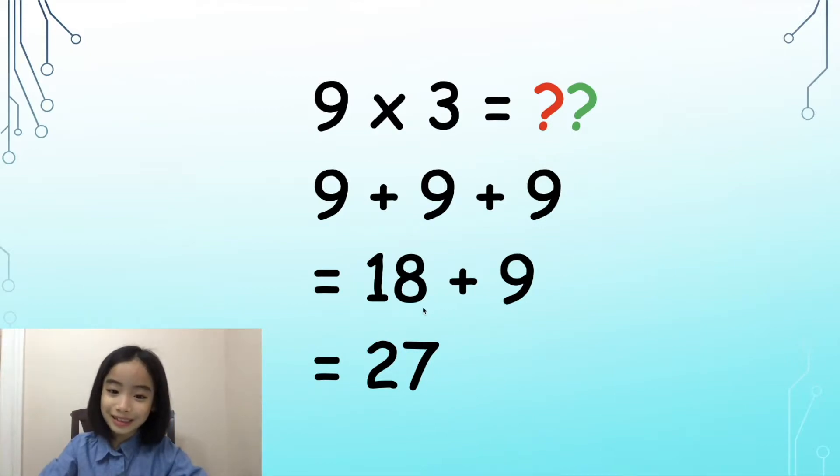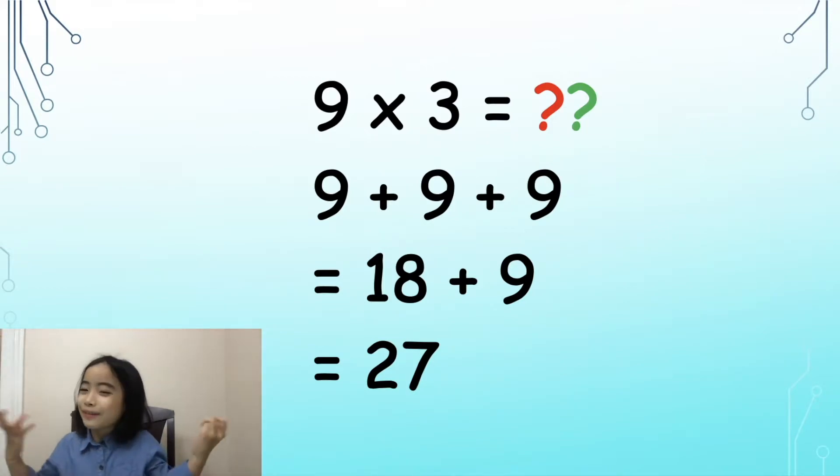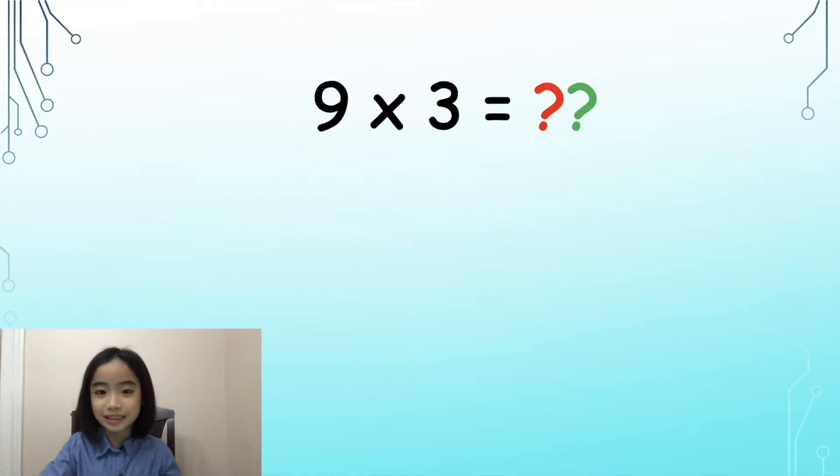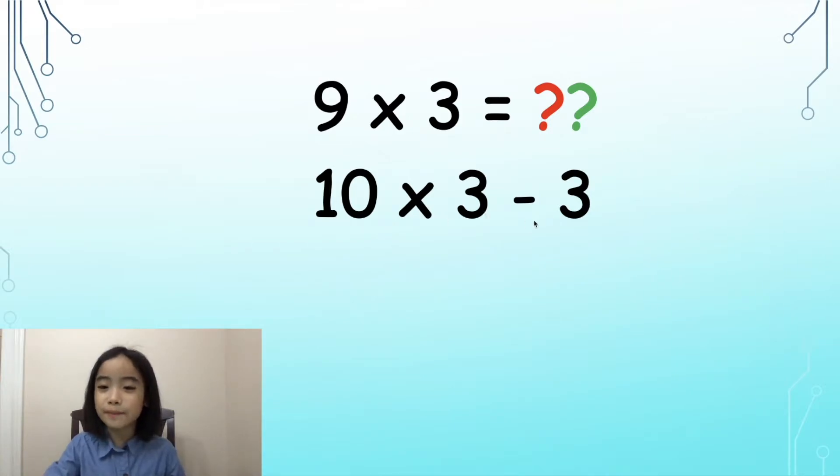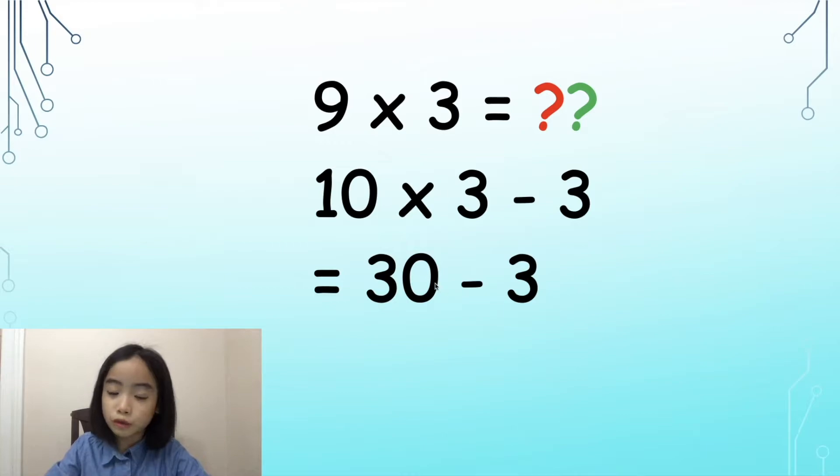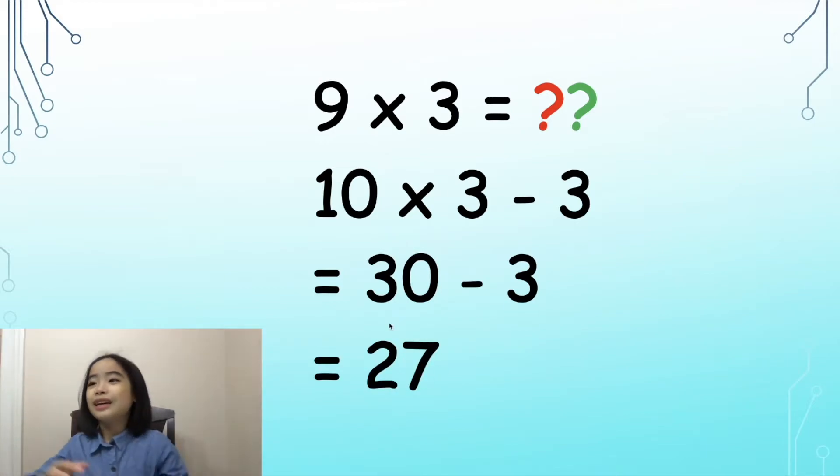So, here is our answer. But this takes a lot of time to calculate. Is there a faster way? Well, 9 times 3 is the same thing as 10 times 3 minus 3. Equals 30 minus 3 equals 27. This is faster than before, but still slow.